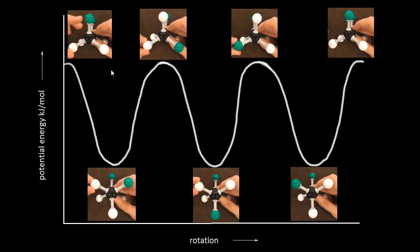Here we have a graph of the potential energies of the conformations we just saw in the video. We started out with this eclipsed conformation of ethane at this particular potential energy. As we rotate to get to the staggered conformation, you can see there's a decrease in potential energy. So the staggered conformation has a lower potential energy than the eclipse conformation. When we rotate again, we get back up to this eclipse conformation — notice that takes energy.